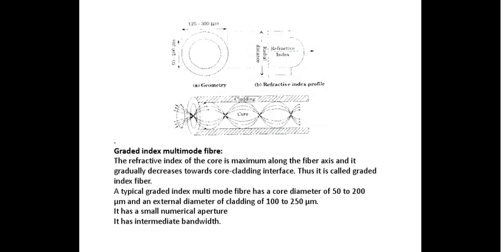If you look at the refractive index, it gradually changes from the center of the core to the core-cladding interface. From the center optic axis to the core-cladding interface, there is a gradual change. When light enters the optical fiber, it behaves according to this refractive index profile. The light converges toward the center horizontal axis, then diverges at the core-cladding interface, then converges again — moving in a wave-like pattern. In the diagram, you draw this wave-like pattern with around three waves.